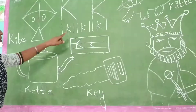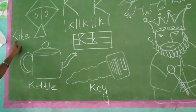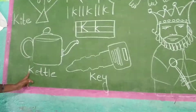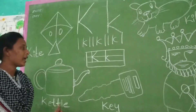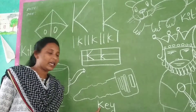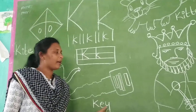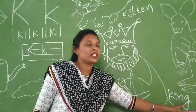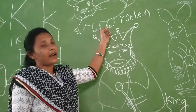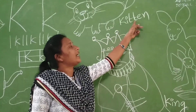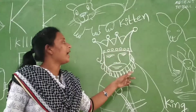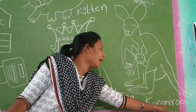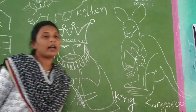Now I will spell the picture names. K for Kite — K-I-T-E, kite. K for Kettle — K-E-T-T-L-E, kettle. K for Key — K-E-Y, key. K for King — K-I-N-G, king. K for Kitten — K-I-T-T-E-N, kitten. K for Kangaroo — K-A-N-G-A-R-O, kangaroo.